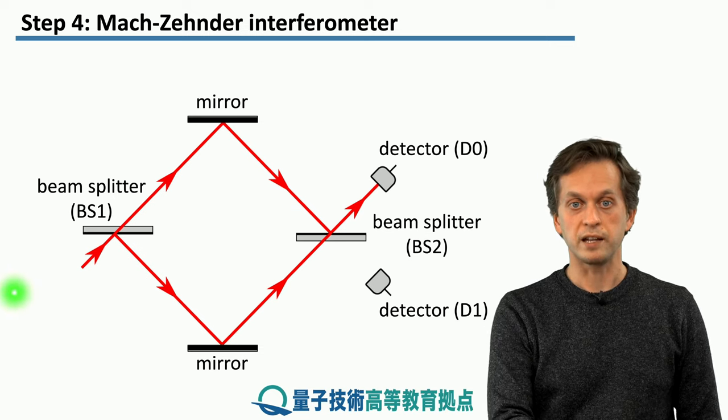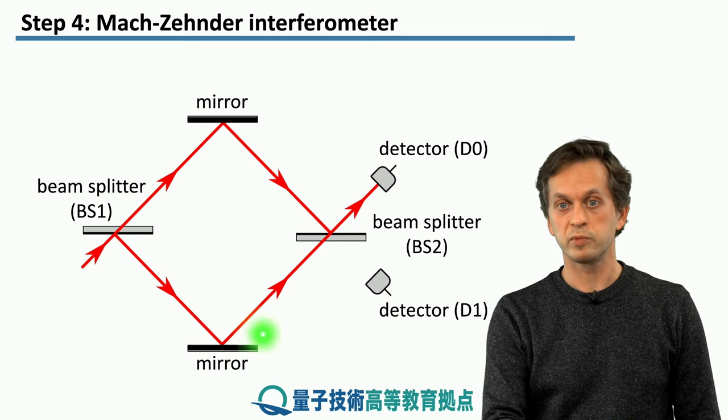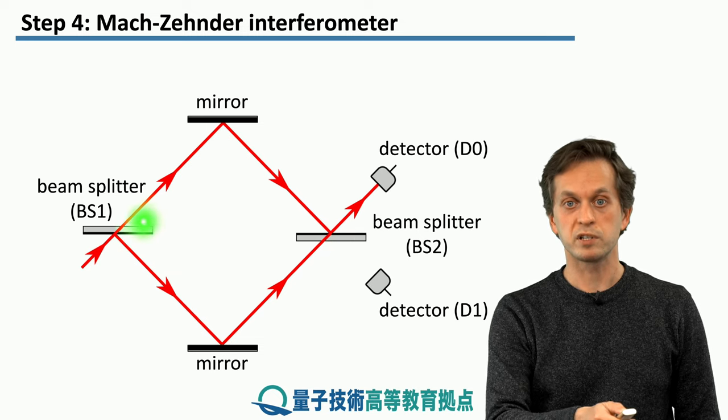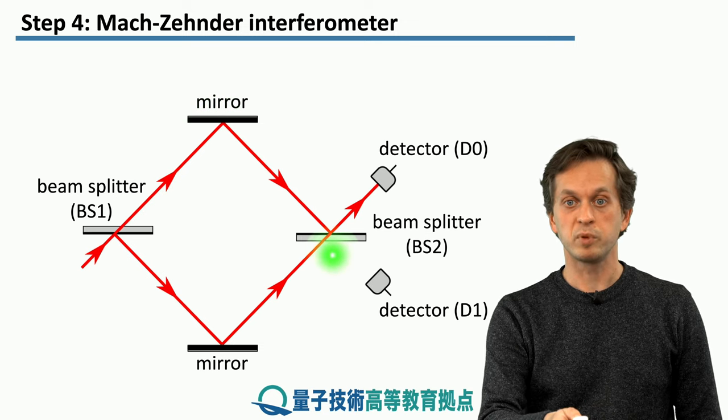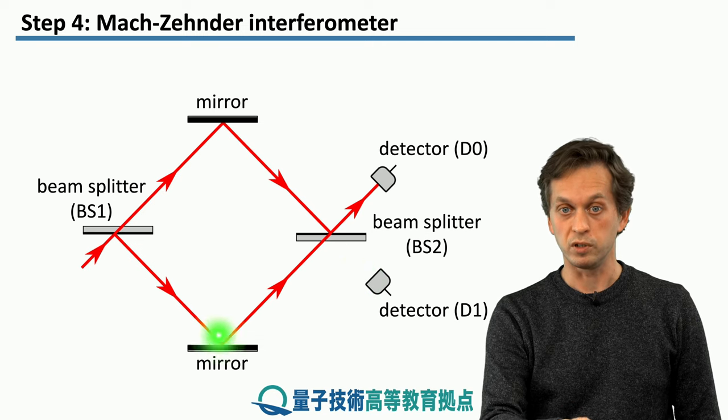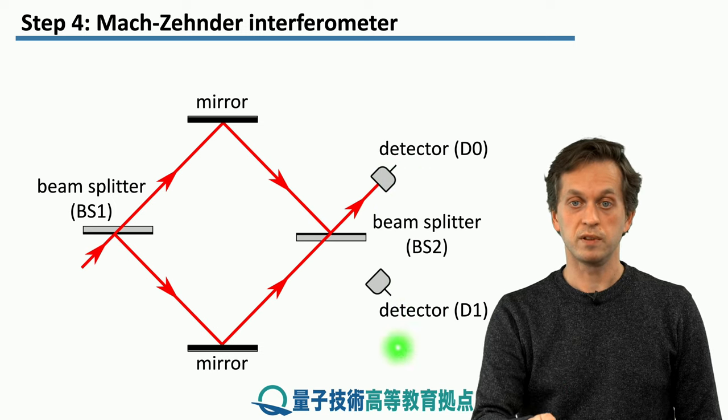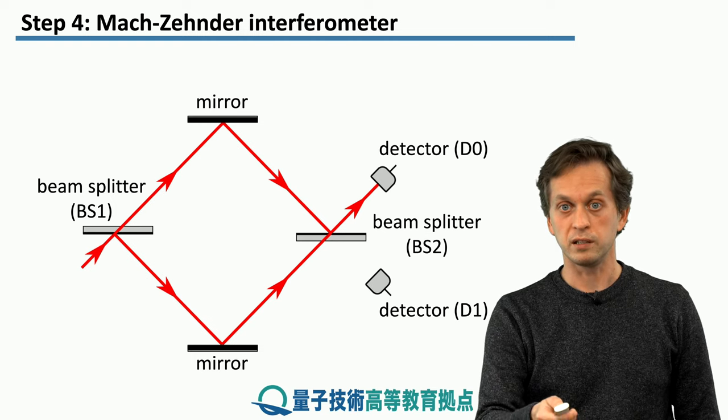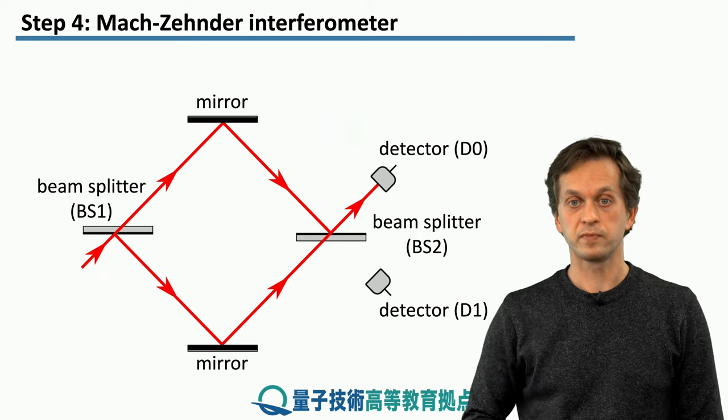Here, what can happen is the light can be reflected from the first beam splitter, bounce off the mirror and enter the second beam splitter. Or it can be transmitted through the first beam splitter, bounce off the top mirror, hit the second beam splitter, interfere with the beam coming from the bottom branch. And either it will be detected at D0 or D1. If the path lengths are the same, then for this scenario, it will always be detected in this top detector D0.